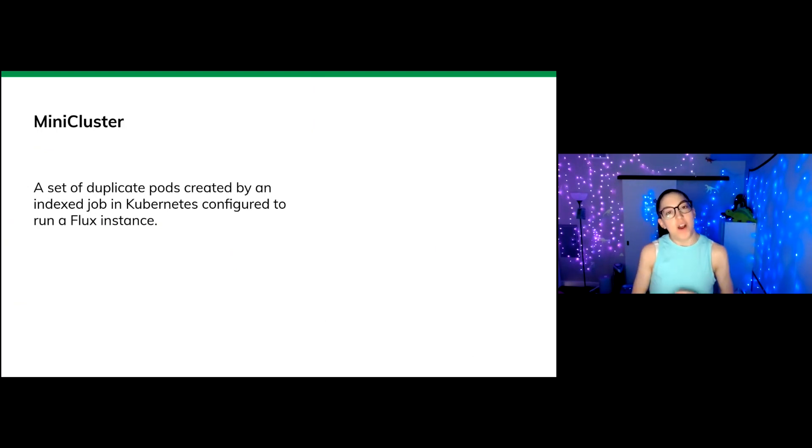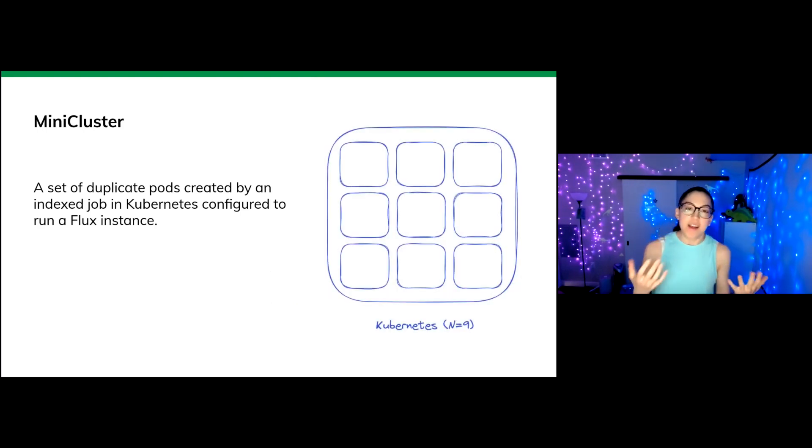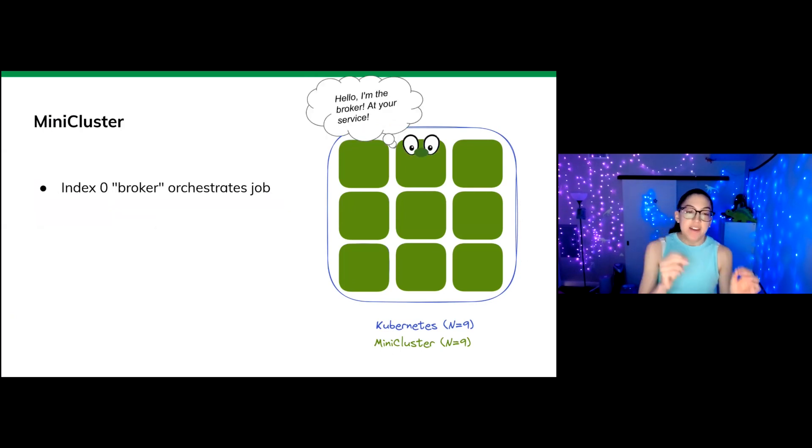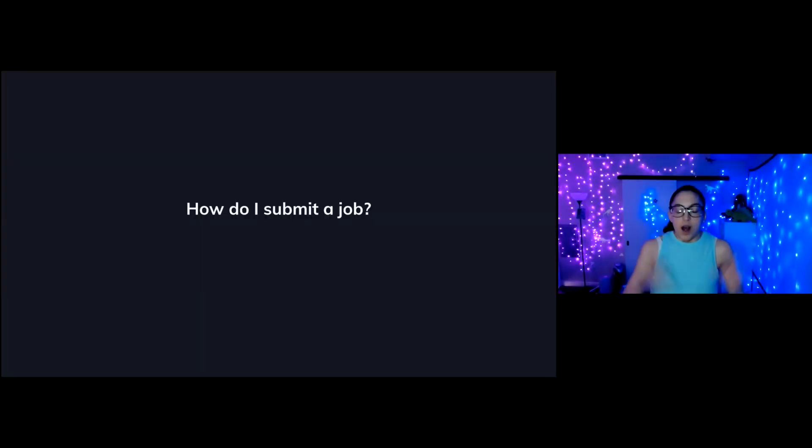I need Kubernetes configured to run a Flux instance. And it's really cool conceptually because it's like you have an entire cluster in the cloud, an HPC cluster for you to control. So let's say we start with a Kubernetes cluster of size nine. We could theoretically create a mini cluster also of size nine to maximally utilize our resources. And index zero of that job is called the broker orchestrating the job. The way the pods communicate is via a tree-based overlay network. And it has all the niceties that you'd expect: batch jobs, queuing, et cetera.